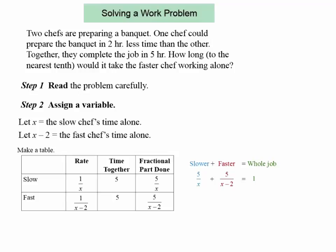Two chefs are preparing a banquet. One chef could prepare the banquet in two hours less time than the other. Together, they complete the job in five hours. How long would it take the faster chef working alone?